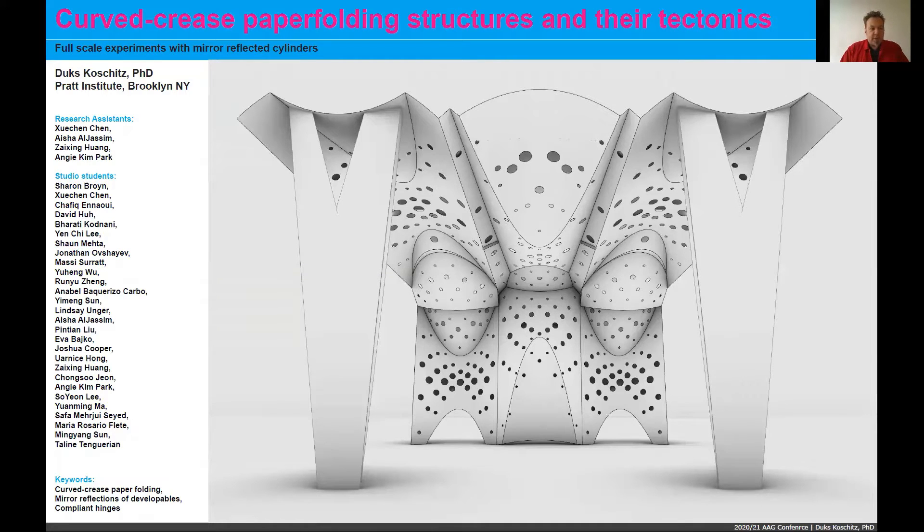The paper is called Curved Crease Paper Folding Structures and Their Tectonics, and we're trying to report on the findings of several projects that we have undertaken. A specific topic in geometry is mirror-reflected cylinders. I'll get into what that is a little bit later.